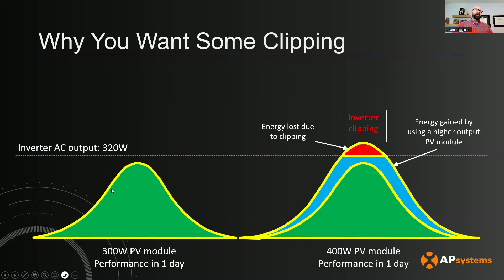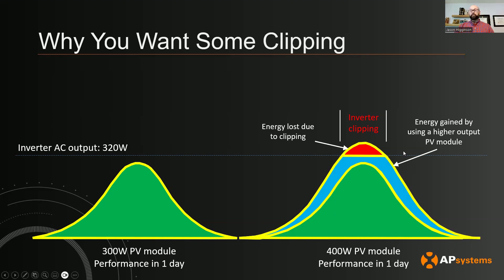Compare this 300 watt PV module with no clipping to the scenario where you have some clipping — but look at what you're also gaining on top of that green area, you're also gaining all of this blue. So in the end, you want to have some clipping. You want it to be appropriately oversized to account for STC versus PTC and for possible degradation over time. That's it — Clipping Explained. I'm Jason Higginson with AP Systems and we'll tackle more of your questions soon. Thanks.